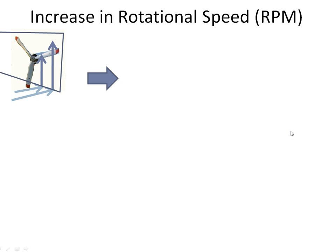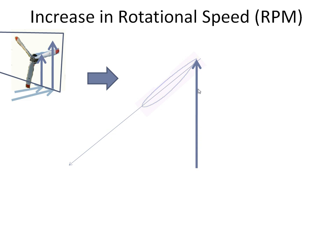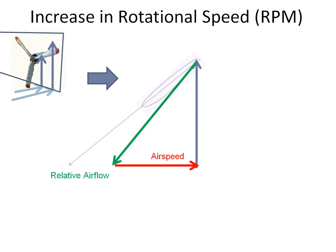Now let's look at it more closely. Let's take this section of the propeller — that's the propeller chord line. Here is the velocity due to the rotational velocity, and here is the velocity due to the forward airspeed of the aircraft. Combining those two vectors, we get a relative airflow. The definition of angle of attack is the angle between the chord line and the relative airflow — there's our angle of attack.